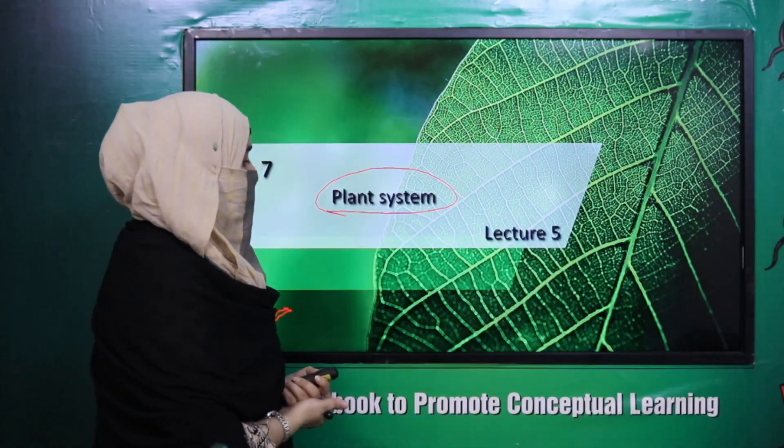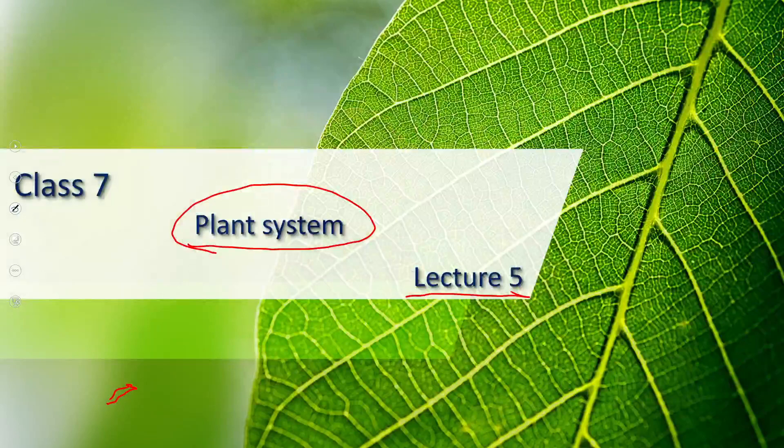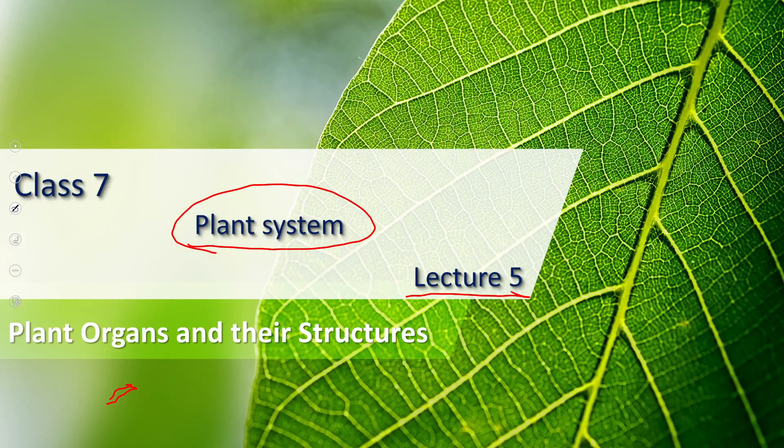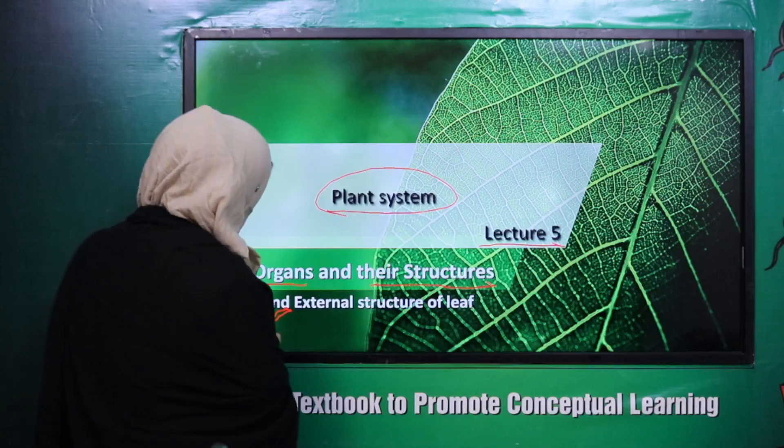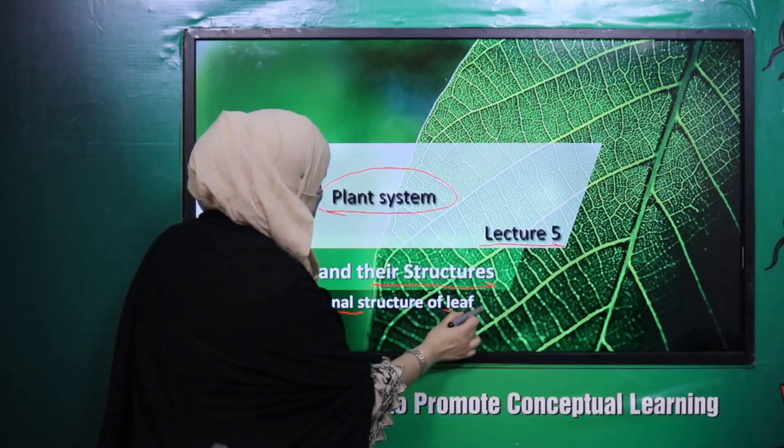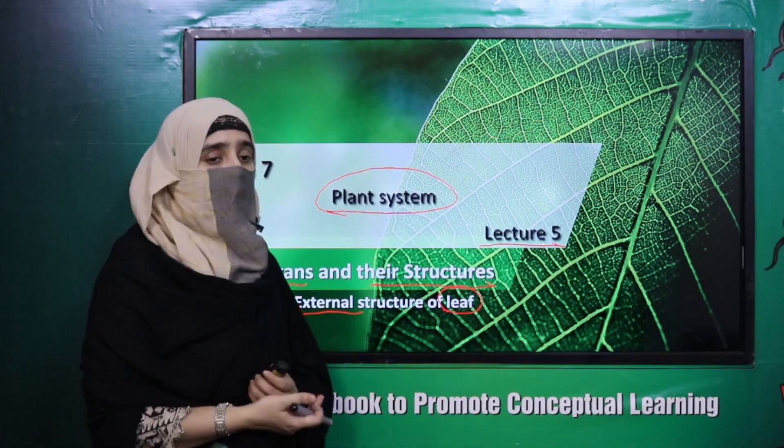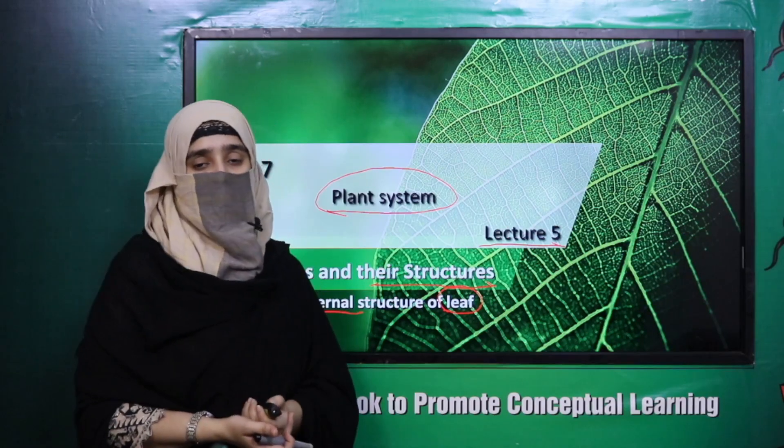Today we are going to start lecture 5, which is about plant organs and their structure. Today we will learn about the internal and external structure of leaves.